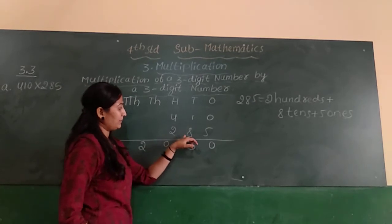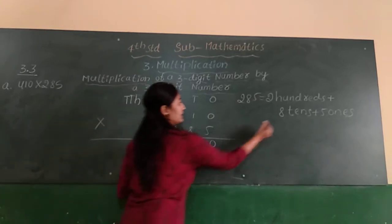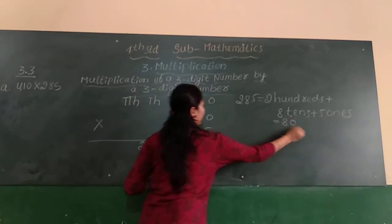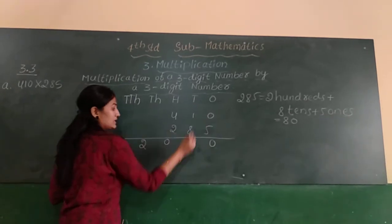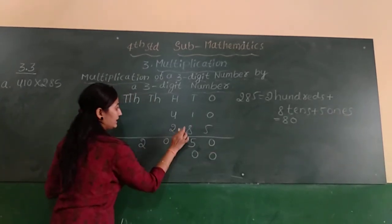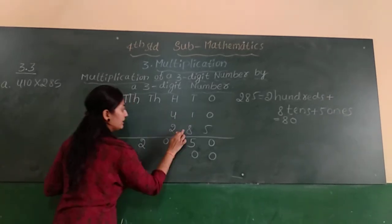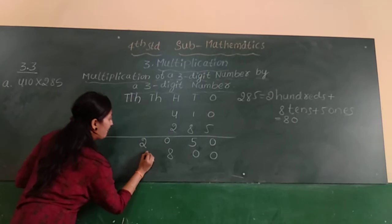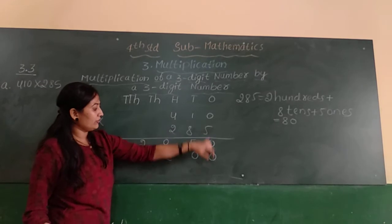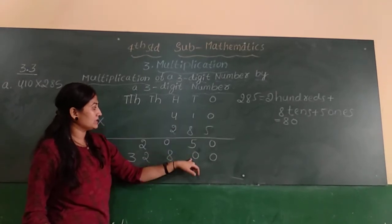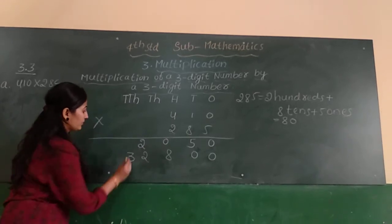Next multiply by 8. 8 is in the tens place, so 8 tens means 80. 80 into 0 is 0. Next 8 ones are 8. Next 8 fours are 32.